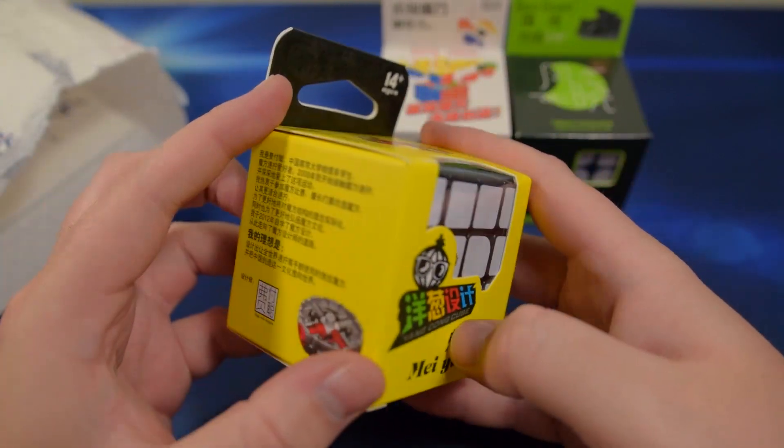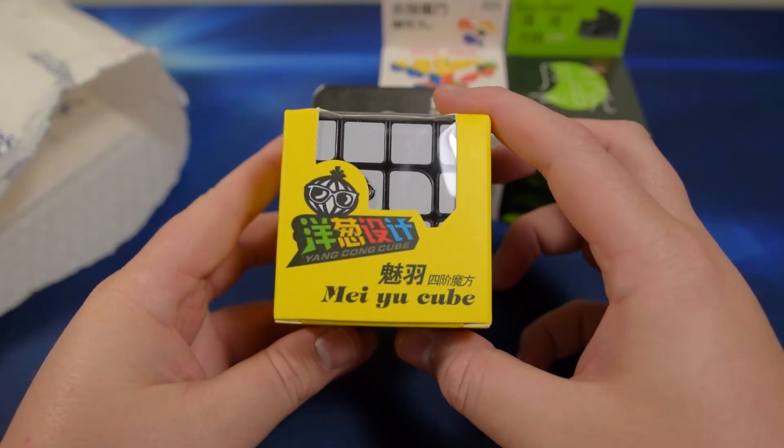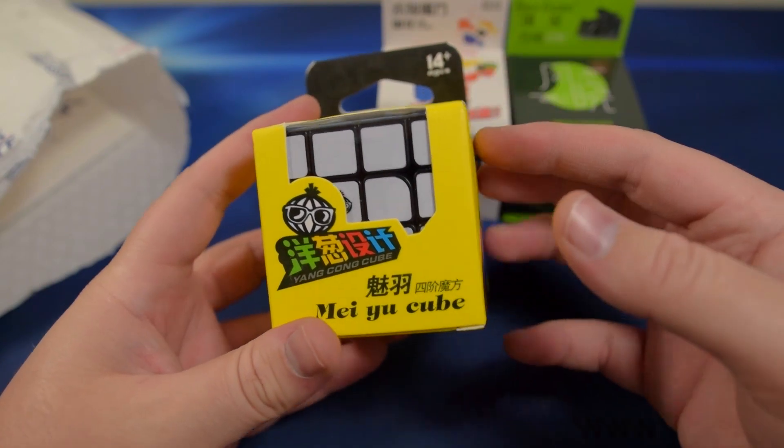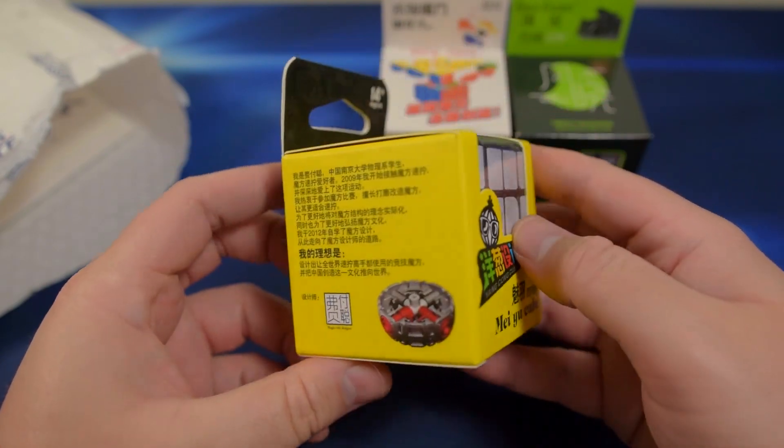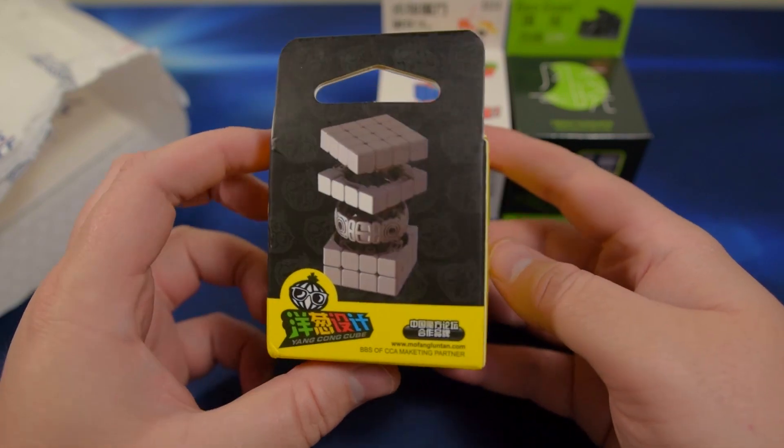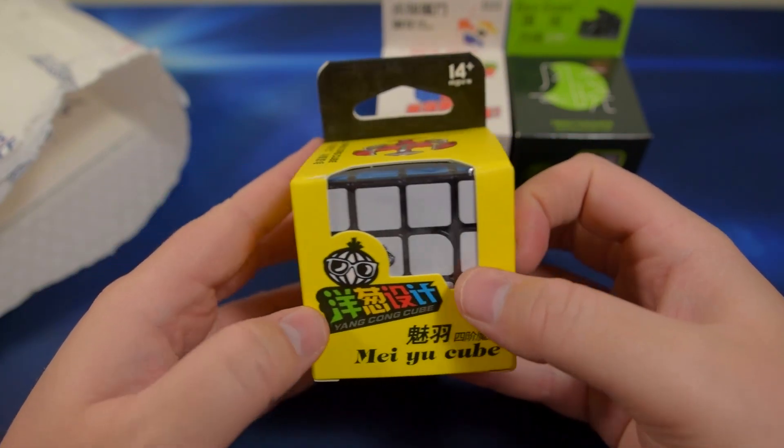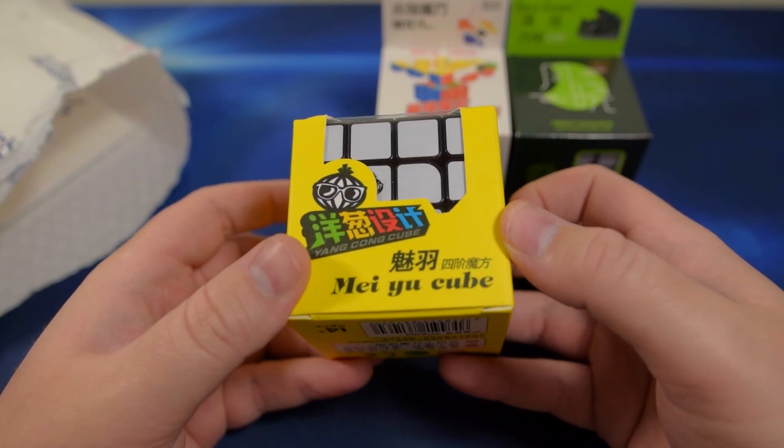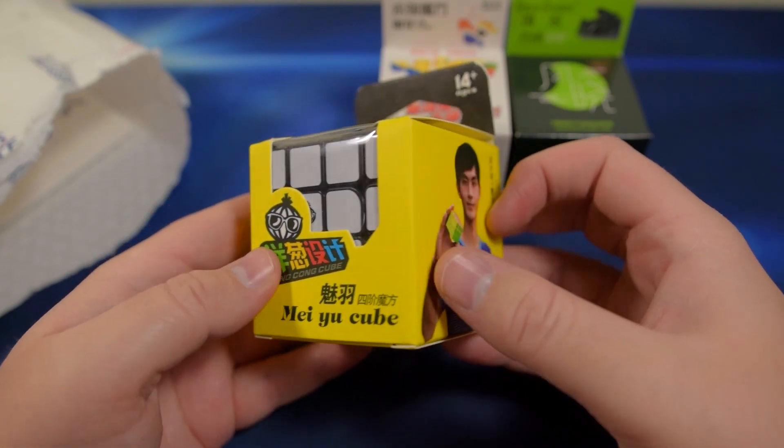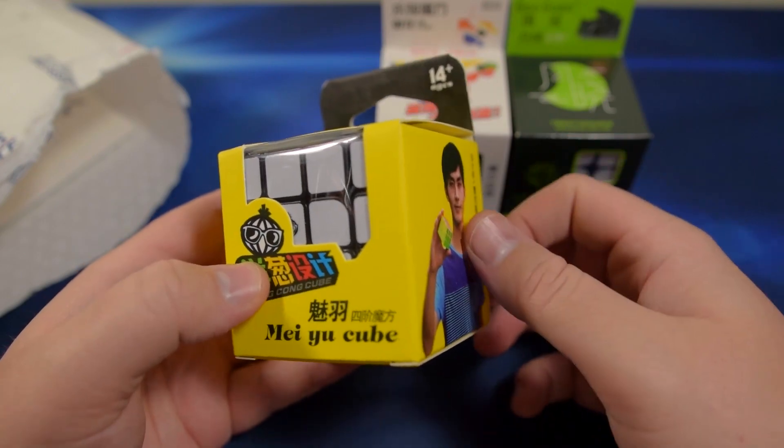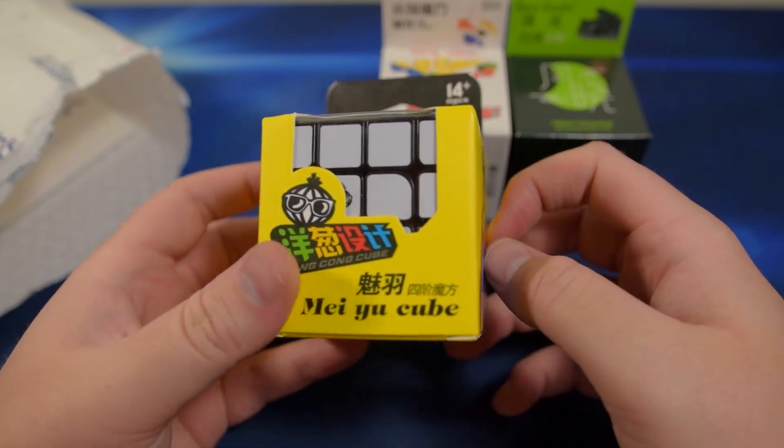And then we have one more puzzle in here. Oh, this is the new Kong's design MeiYu, their new 4x4. Now I've heard some pretty interesting stuff about this. Apparently, the first run of these puzzles is a little bit flawed or there was something wrong with the manufacturing. I will have more information about that in the description if you want to check it out, but I'm excited to see how this works out.